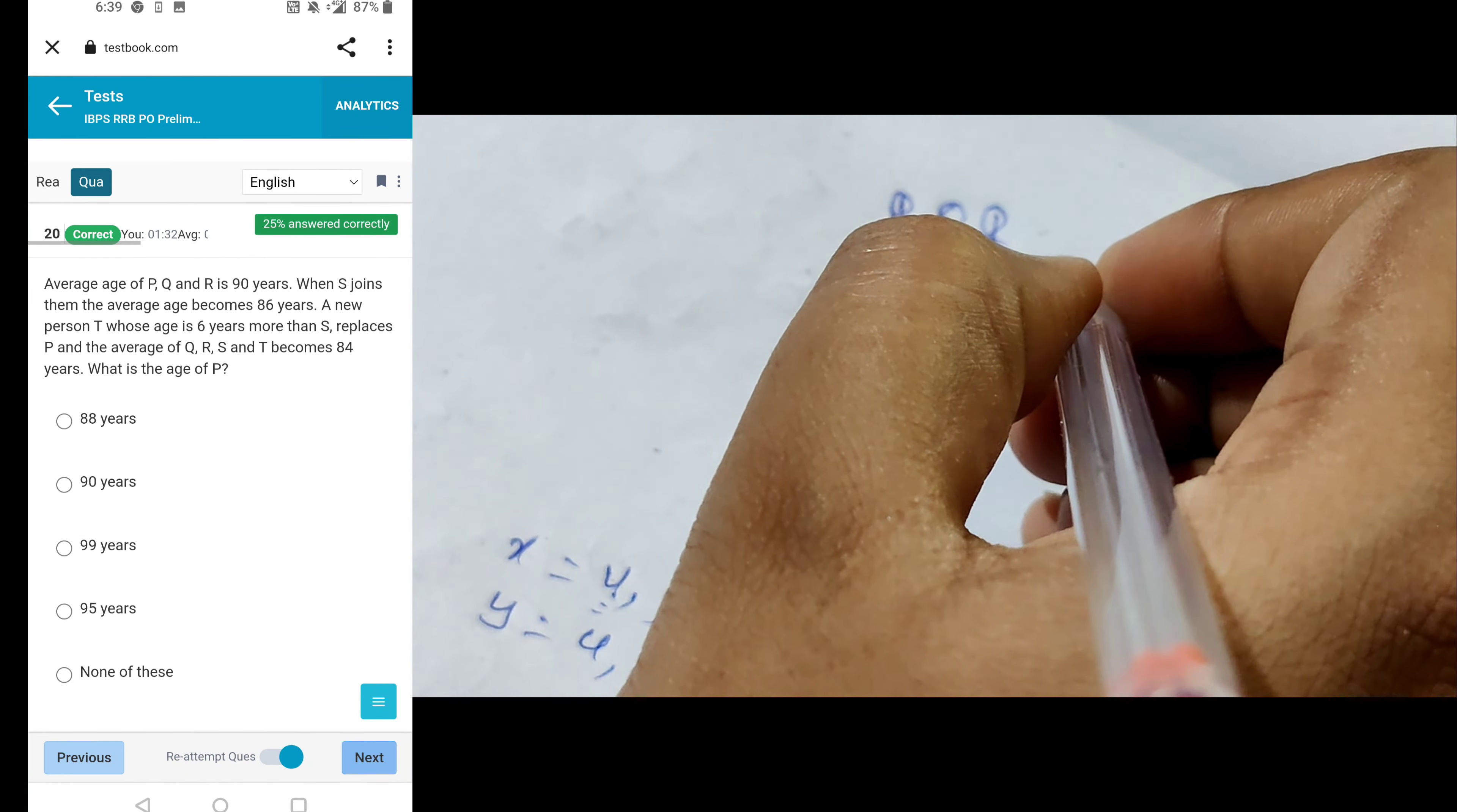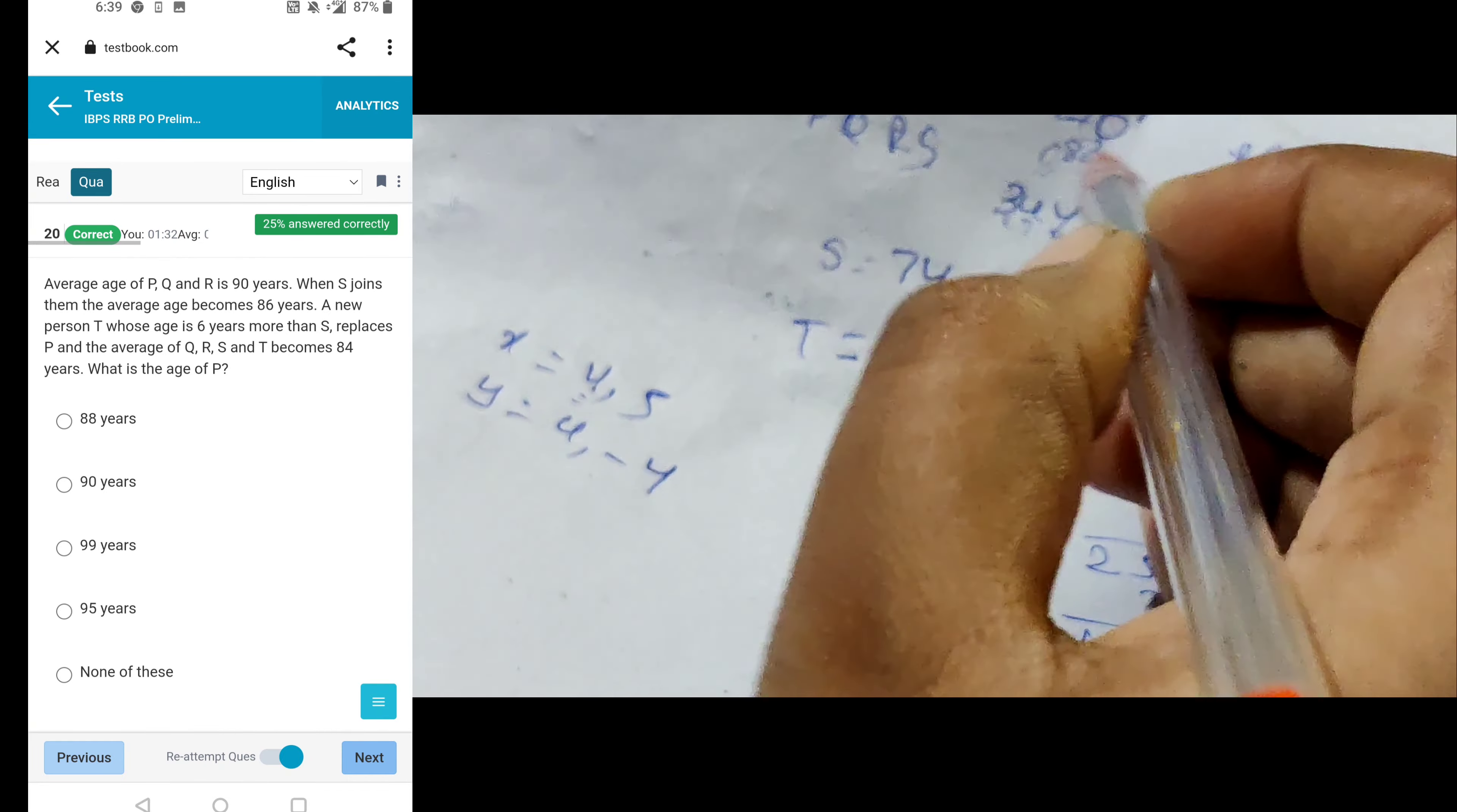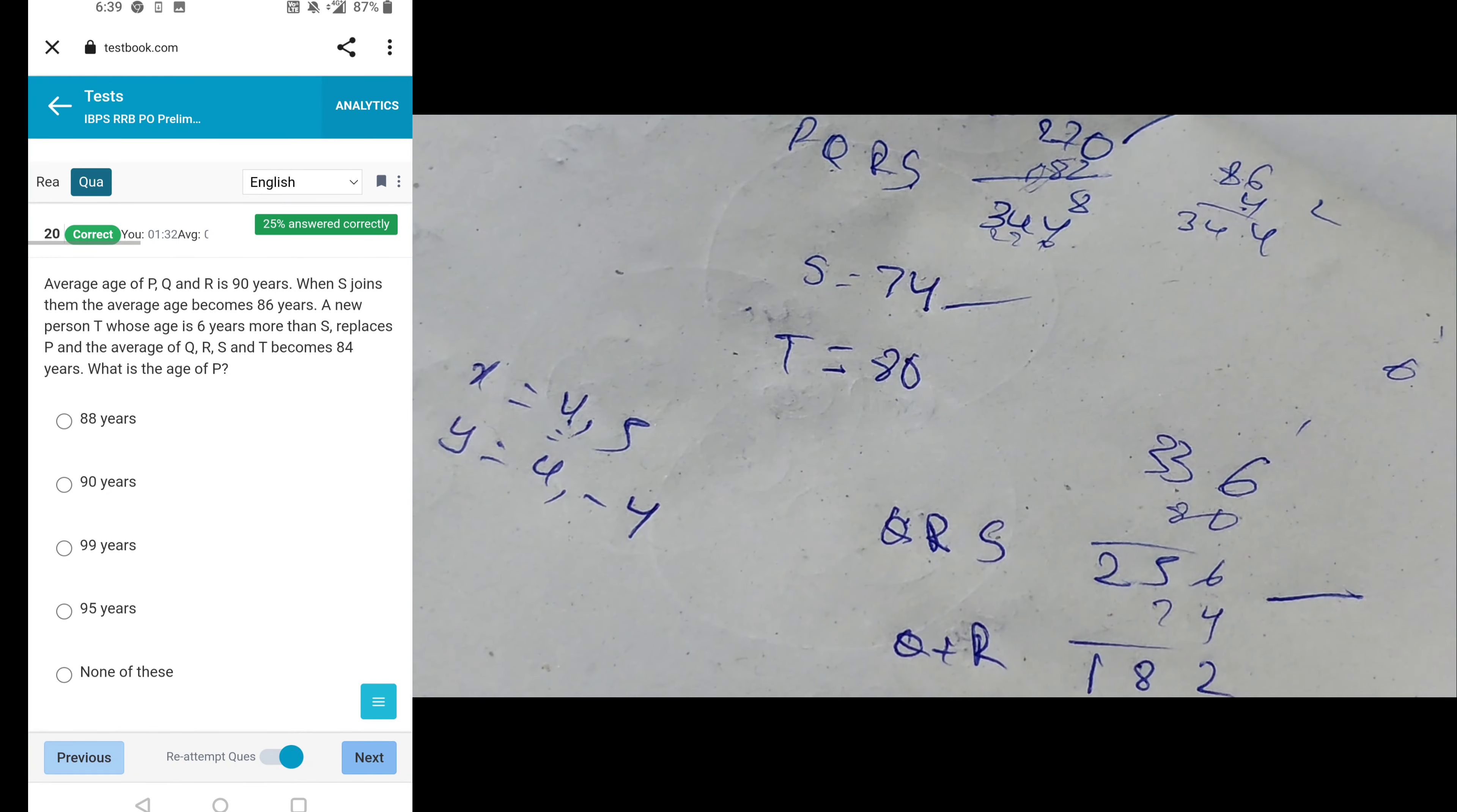Next, given average of P, Q, R, S is 90 times 3 equals 270. S joins, average is 86 times 4 equals 344. Plus P, Q, R, S, so S is 270 minus that equals 74. T is 6% more than S, meaning 80. T replaces P. The average of Q, R, S, T is 84, again times 4 equals 336. When salary T is 80, 256 is Q plus R. From equation 1, 270, 182, we will get the value of P. So 88 is the option.